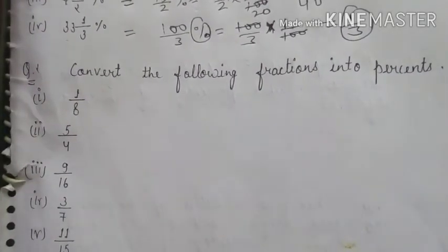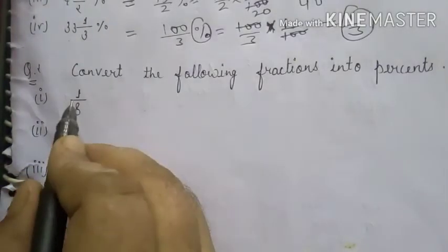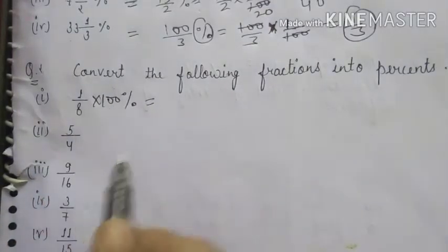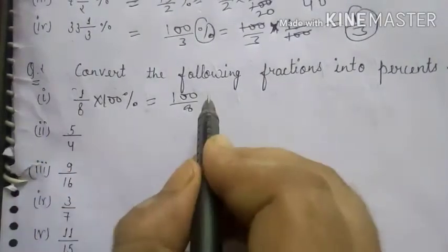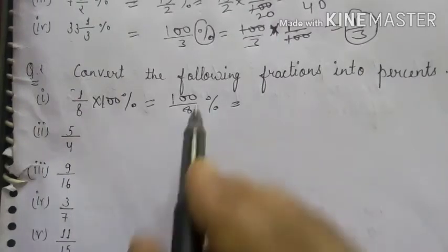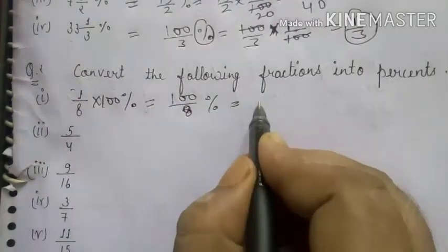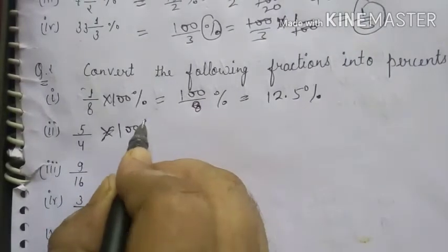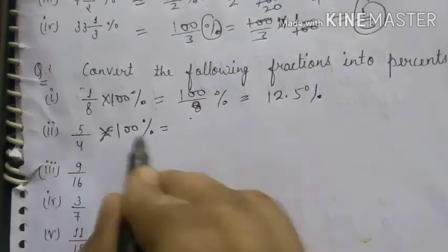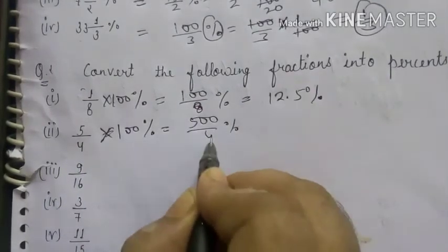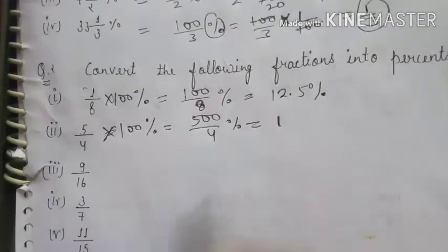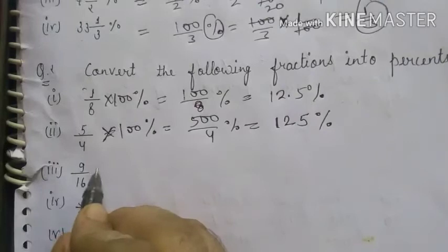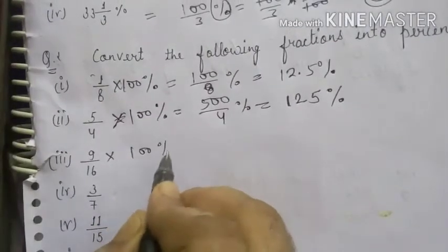Question 2: Convert the following fractions into percent. Multiply by 100 and use the percent sign. For 1 upon 8: it gives 100 upon 8 percent. Dividing 100 by 8 gives 12.5%. For 5 upon 4: multiply by 100 to get 500 upon 4 percent. Dividing 500 by 4 gives 125%. For 9 upon 16: multiply by 100, cancel 4 from 100 and 16, giving 25 × 9 = 225 upon 4 percent.